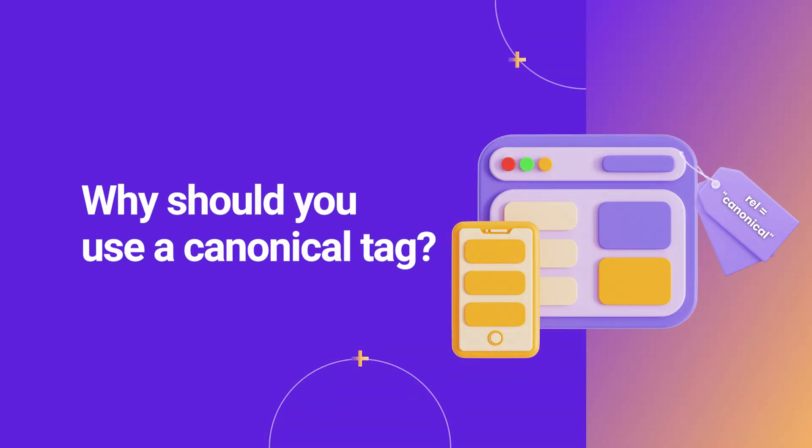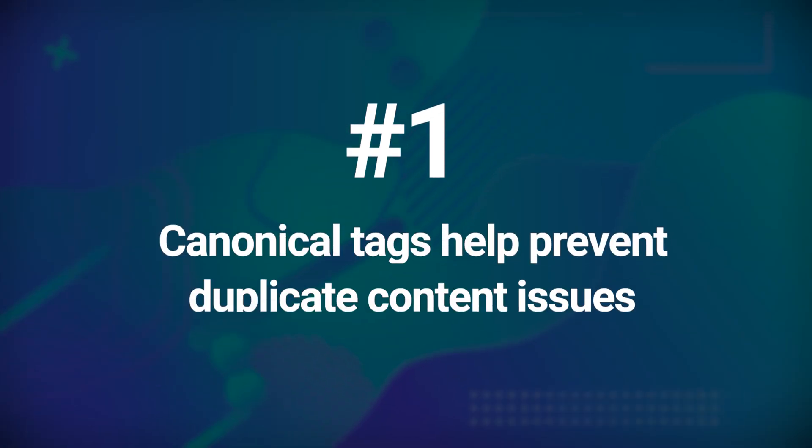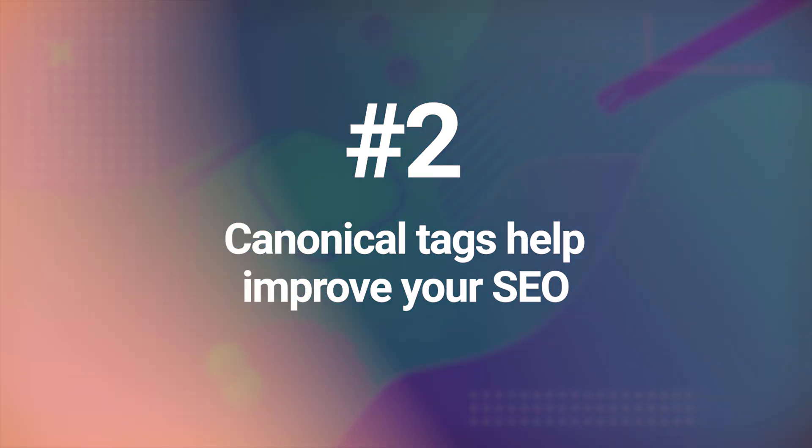So why should you use a canonical tag? First, canonical tags help prevent duplicate content issues. If you are seeing duplicate content as an issue in your Google Search Console, you will need to add canonical tags on the affected pages to help search engines identify which one is the main page. They also help improve your SEO — if you have multiple articles that are slight variations of each other and you want only a single one to rank, a canonical tag can be used on all supplementary pages to boost SEO for the main one. Ultimately, you also need to clarify to Google that this is the main page and this is where you want to draw all the traffic.